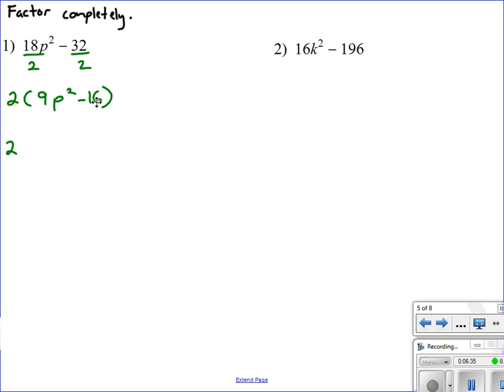Now this 9p squared minus 16 is like the two problems we just did. It's a difference of squares. 9 is a perfect square, 3 times 3. 16 is 4 times 4. So I gotta notice here that if I have 9p squared, then a must be 3p. And if I have 16, then b is 4. And I'm just gonna go ahead and plug that in my formula right here on the left of the whiteboard there.